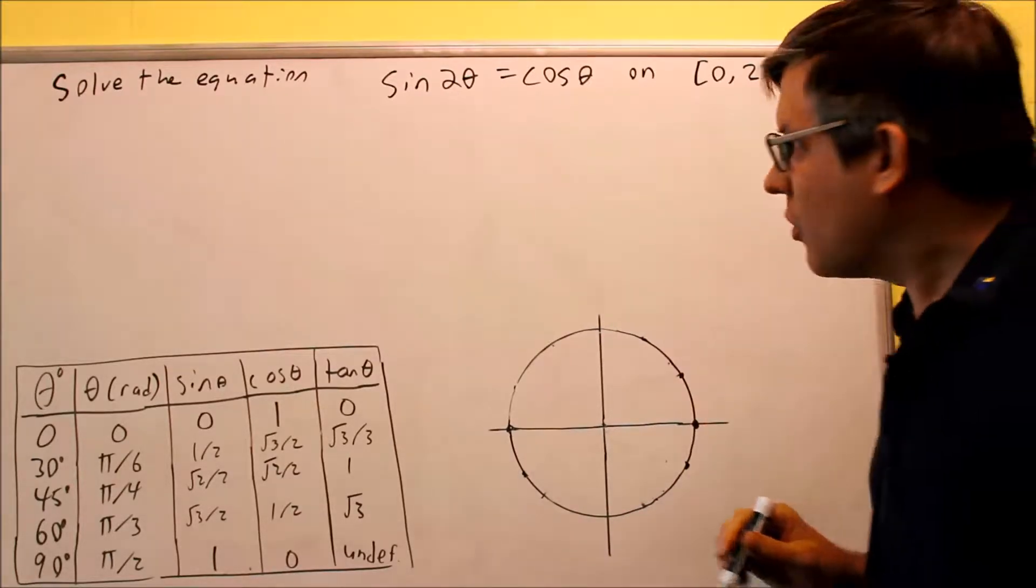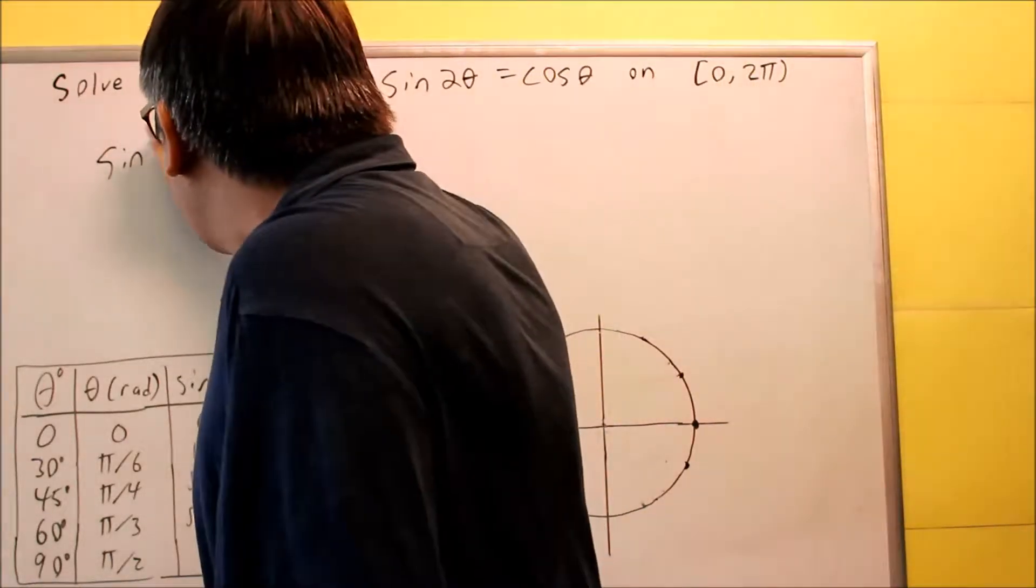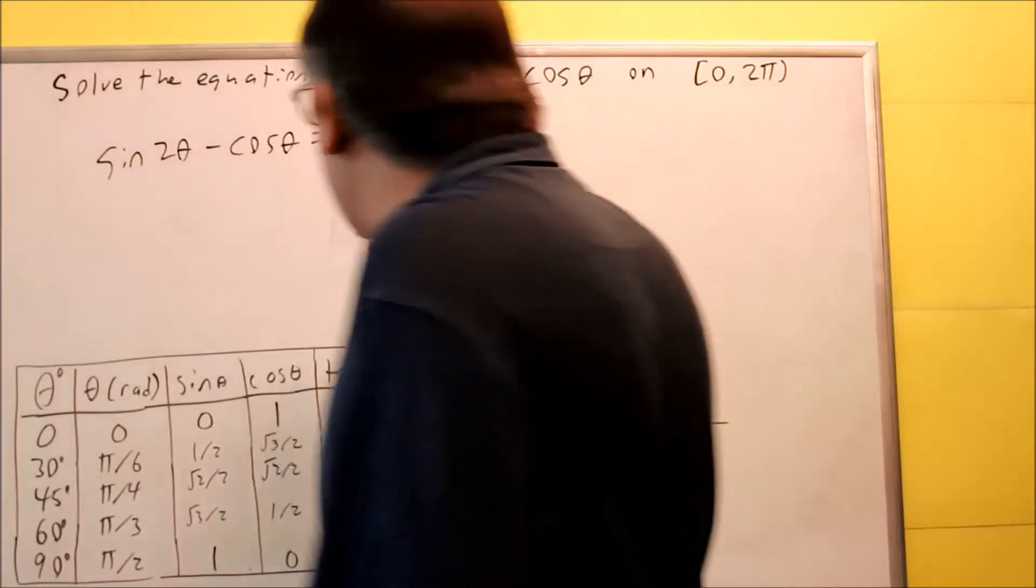So for this one, just subtract cosine from both sides, we get sin 2 theta minus cosine theta equals 0.